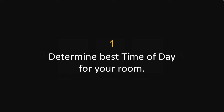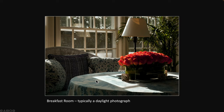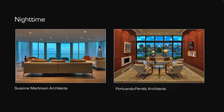Number one is to determine the best time of day for your room — this is really important. It can be a daytime shot; if it's daytime, soft indirect light is one situation you may have, another is really high contrast direct light, and we've looked at paintings by Hopper to show how he handles this intense lighting. Breakfast rooms, for example, are typically on the east side of a house; the light comes in in the morning and those are typically photographed during the day or early morning.